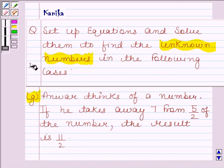Part G states: Anwar thinks of a number. If we take away 7 from 5 by 2 of the number, the result is 11 by 2.